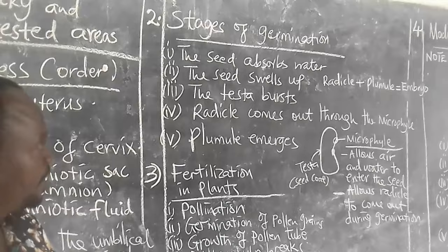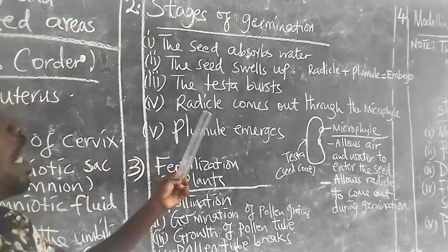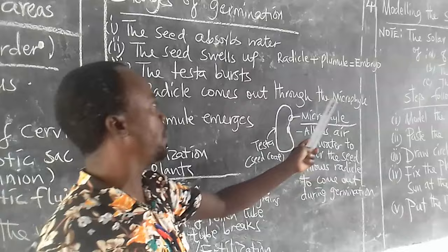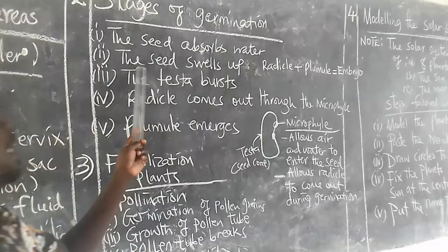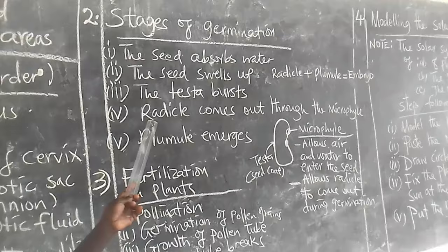The testa bursts. The radicle comes out through the micropyle. Finally, the plant emerges above the ground level.